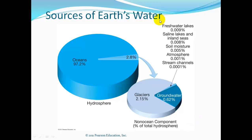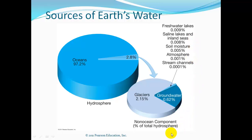Of all of Earth's water, 97.2% is salt water in the ocean. Only 2.8% is fresh water. 2.15% of that 2.8% is locked up in ice and glaciers. 0.62% of Earth's water — fresh water — is in the groundwater. And a very tiny fraction of our fresh water is in freshwater lakes, saline lakes, inland seas, soil moisture, atmosphere, and stream channels.